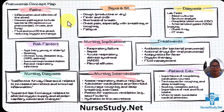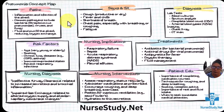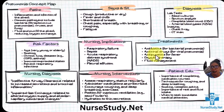We're going to go into the pathophysiology of it. Basically, it's inflammation and infection of the alveoli. Common pathogens include bacteria — so streptococcus pneumoniae — viruses, and even fungi. Fluid and pus will fill the alveoli, reducing oxygen exchange. On this concept map, we're going to be going from here this way.